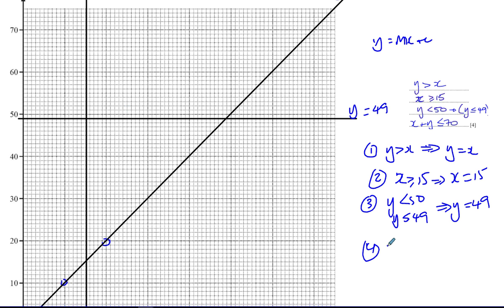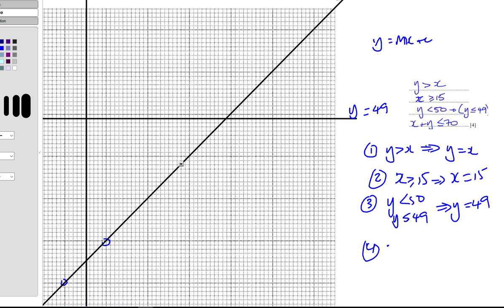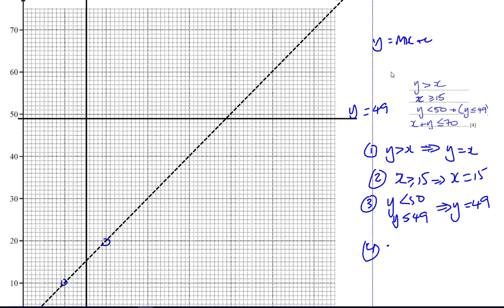One very important thing: the first line — Y = X — should be dotted, because the inequality is Y > X, not Y ≥ X. So it should be a dotted line. Let me change that to a dotted line now. Y > X — not greater than or equal to — so a dotted line is correct.